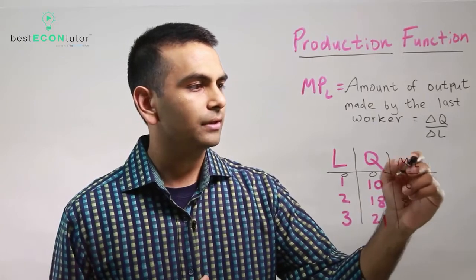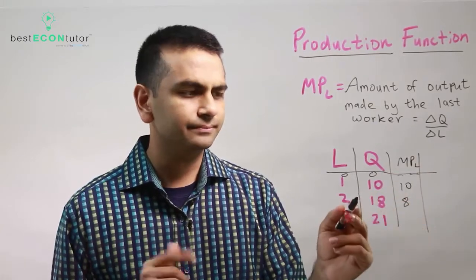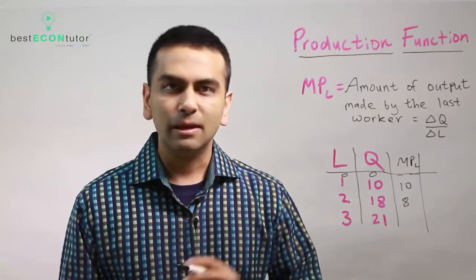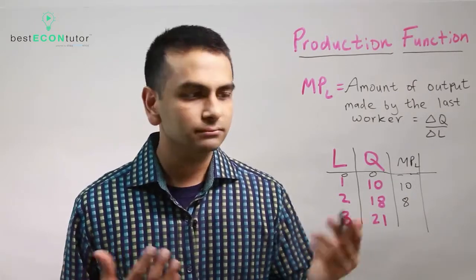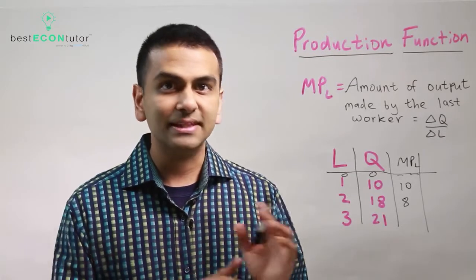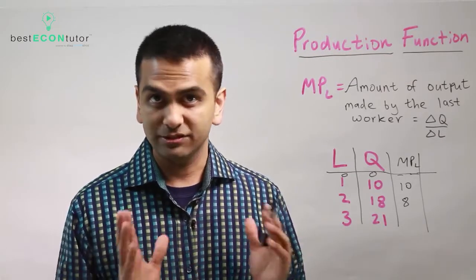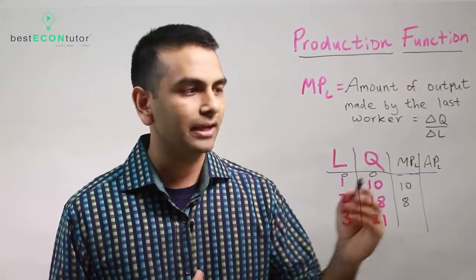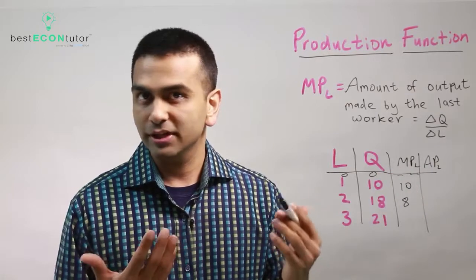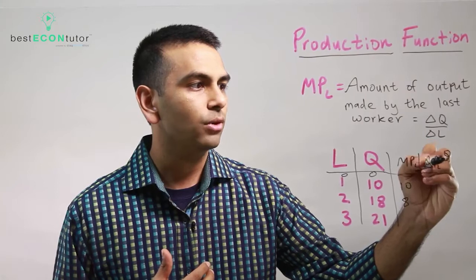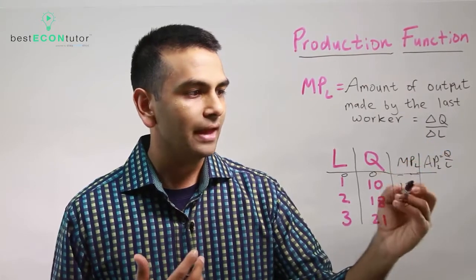Here's one thing: you might look at this and say, if two workers made 18 trucks, doesn't that mean they each made 9? Well, what that's saying is that the average is 9. There's this new variable called the average product of labor, which asks on average how much did each worker make. The formula for APL is simply Q overall, not the change.